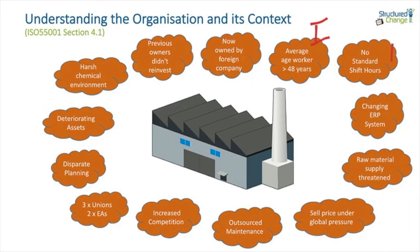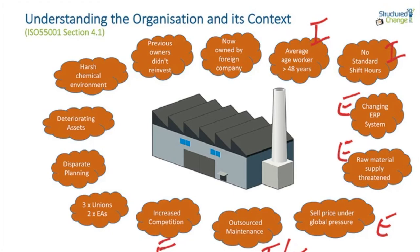There's no standard shift hours — internal. Changing ERP system, driven from the head office overseas — external. Raw material supply threatened — external. Sell price under global pressure — external factor. Outsource maintenance — both internal and external, because one drives the other. Increased competition — external. Three unions and two enterprise agreements — internal. Disparate planning — internal. Deteriorating assets, so the whole system itself is really old and decrepit — internal. Harsh chemical environment — internal.